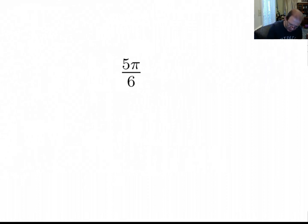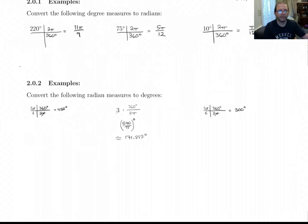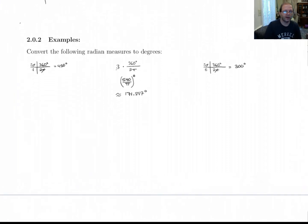And then 5π/6, multiply that by 2π under 360. π is canceled. You get 5/6 of that. Don't need my calculator for that. That's 300 degrees.